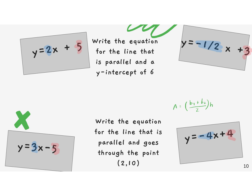When writing the equation of the line that is parallel, y is going to be equal to 2x because they have to have the same slope. The y-intercept is b, so y equals 2x plus 6. Next one: the slope must be the same, so y equals negative one-half x, and the y-intercept is 6 — so y equals negative one-half x plus 6. That's the easiest way to do it.